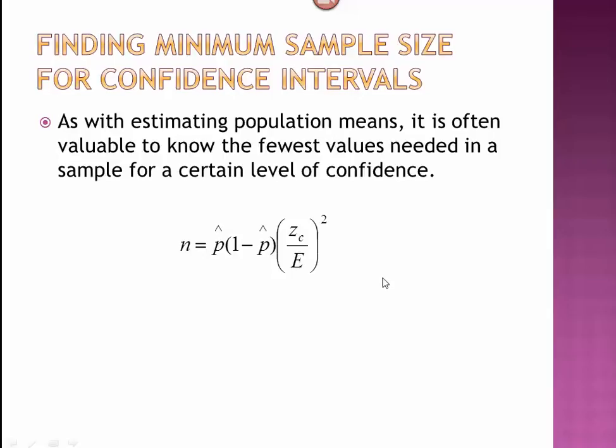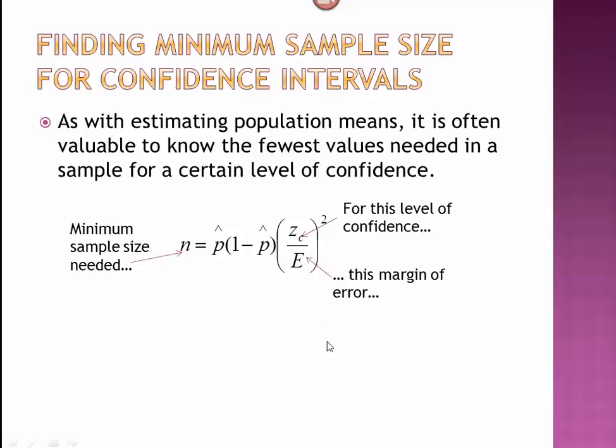What's awkward about this formula is we're trying to calculate n for this level of confidence and for this margin of error. The awkward part is if you think about the process of the study, we have not found p-hat yet. We are trying to do a study, and we're trying to figure out how many people we should talk to so we can estimate p-hat, find our point estimate p-hat. So we haven't found it yet, and that causes a bit of a problem in this formula.